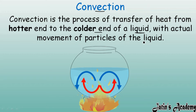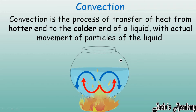In convection, there is actual movement of particles. In conduction, there is no actual movement of particles — particles just transfer energy from one to another. In convection, let's see carefully how it takes place. For example, here we have a beaker filled with a liquid, and in a liquid the particles are farther apart from each other.